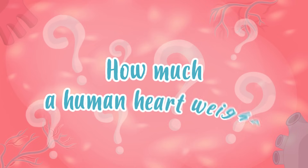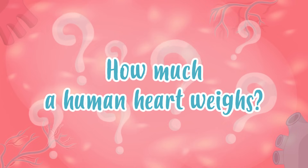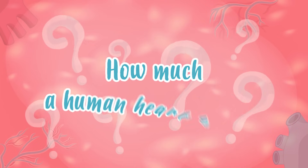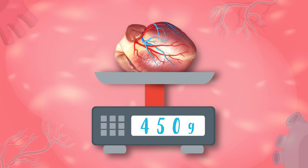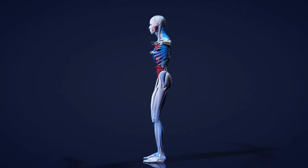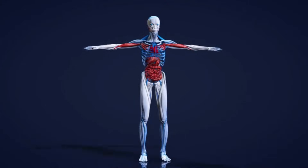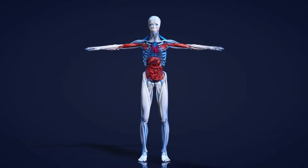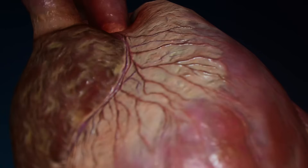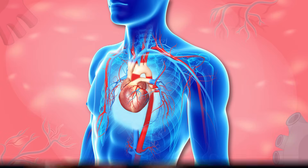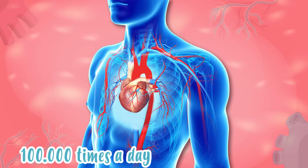Fun fact! Do you know approximately how much a human heart weighs? Well, it's 450 grams — almost half a kilo! The truth is that the heart is the engine in our circulatory system, and is an incredibly strong muscle. It's able to beat more than 100,000 times a day! So cool!